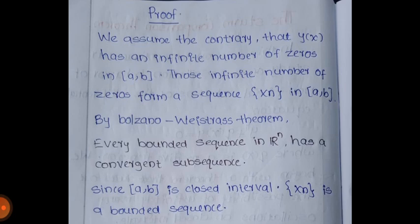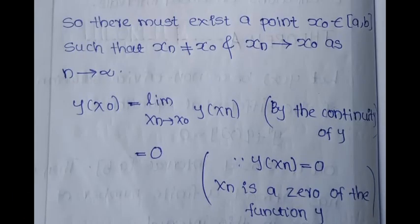Those infinite number of zeros form a sequence {x_n} in [a, b]. Then by the Bolzano-Weierstrass theorem, every bounded sequence in R^n has a convergent subsequence. The closed interval [a, b] is bounded, and since {x_n} is defined on this closed interval, {x_n} must be bounded, so it has a convergent subsequence. This implies there exists a point x_0 in [a, b] such that x_n ≠ x_0 and x_n → x_0 as n → ∞.